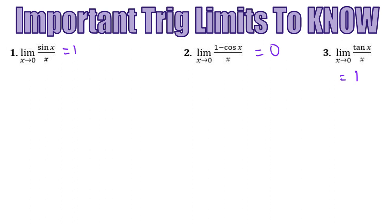If you try to evaluate each of these limits using direct substitution, you're going to end up with 0 over 0, which is undefined. Remember that just because something results in indeterminate form doesn't mean that the limit doesn't exist — it means we need to approach that limit in a different way. If you want to convince yourself these three limit statements are true, you could graph sine of x over x, 1 minus cosine of x over x, or tangent of x over x in Desmos and zoom in close to 0. You're going to see a hole in the graph.